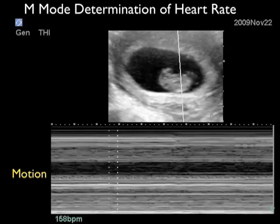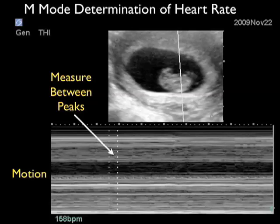Here we're going to use M-Mode to determine the fetal heart rate. Notice we have the fetus zoomed up towards the top of the image and we're placing the M-Mode caliper directly over the fetal heart. Towards the bottom, we see the M-Mode motion strip and the little waves showing the motion of the fetal heart. In this particular ultrasound machine, we measure between each peak and we can see a heart rate determination of 158 beats per minute. This is something we can print out and place on the chart to show that at the time we saw the baby, there was an actual heartbeat.